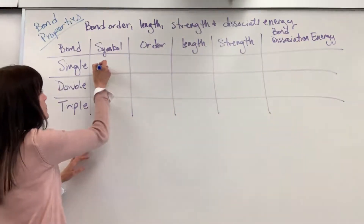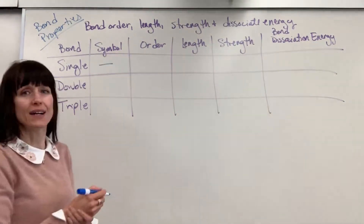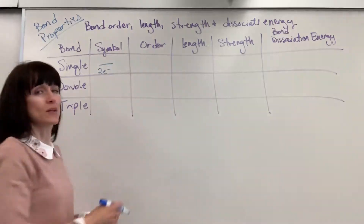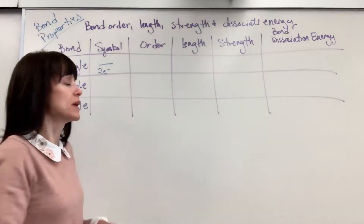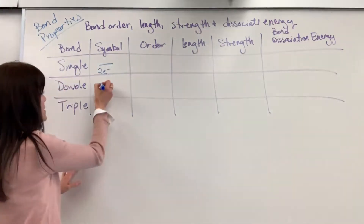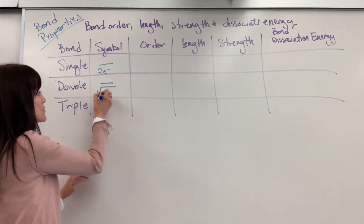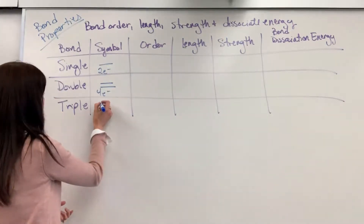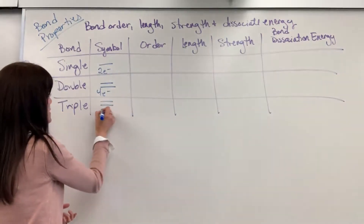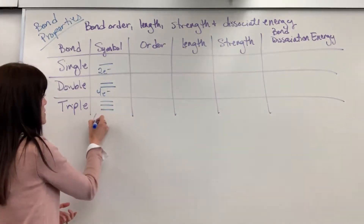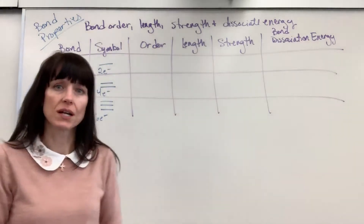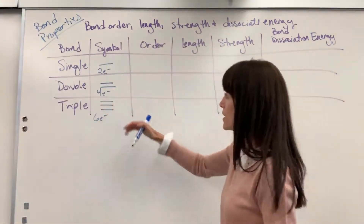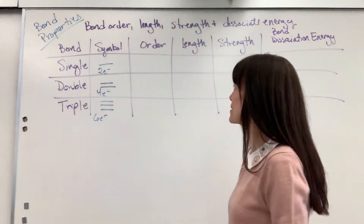A single bond's symbol is the dash. Remember that means two electrons are being shared. The double bond is two dashes, which means four electrons are being shared. And the triple bond is three dashes, which is six electrons being shared. As a reminder, each dash indicates two electrons being shared.